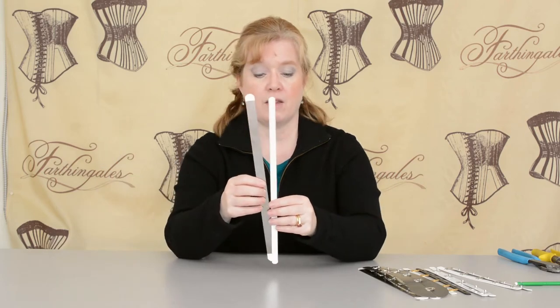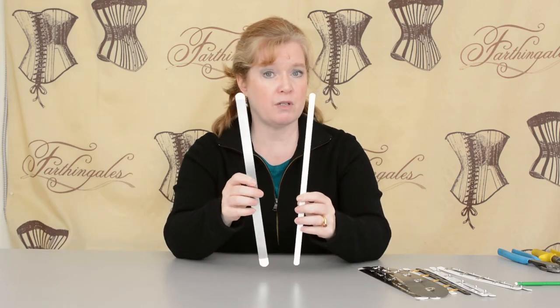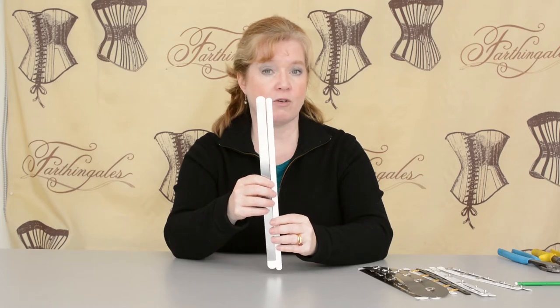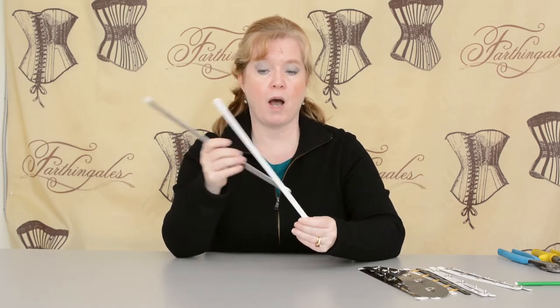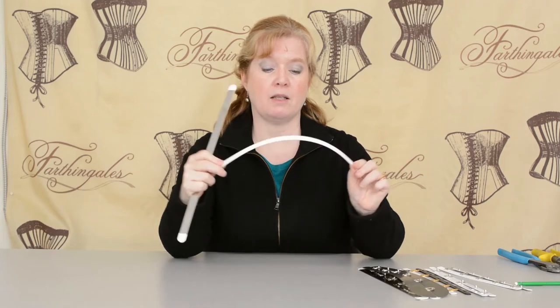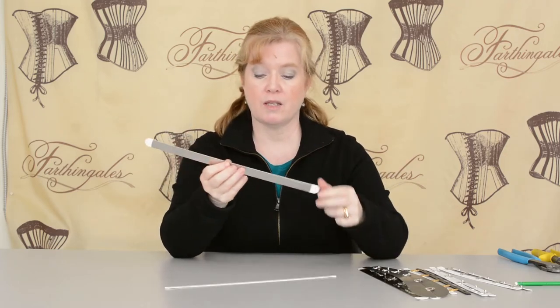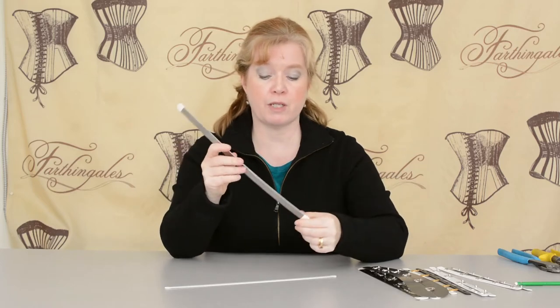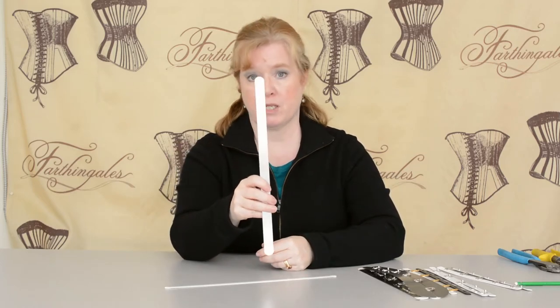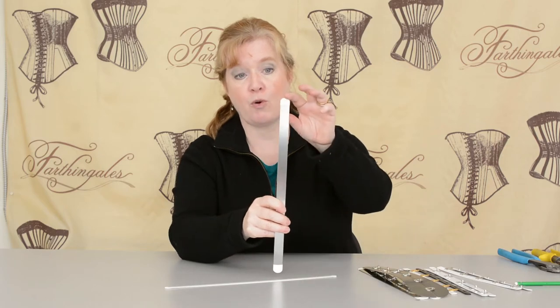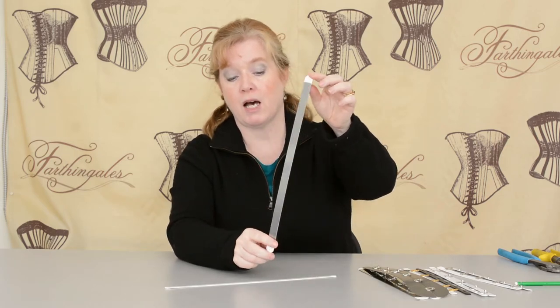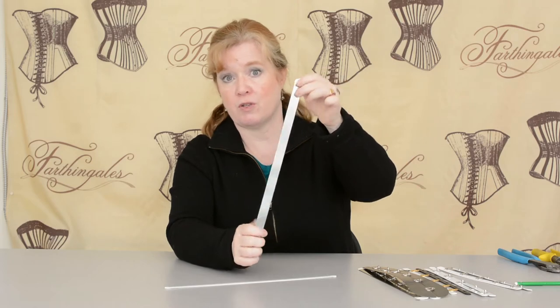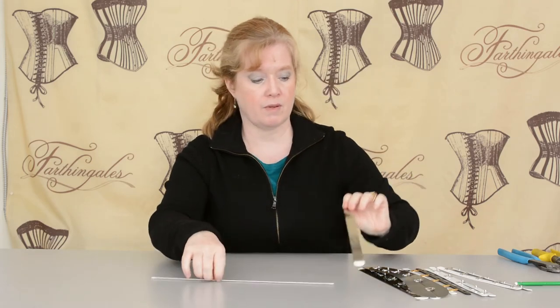Prior to the 1830s, busks did not open, but they did exist. They used to be a piece of wood, a piece of ivory, often engraved. Now you can use a wide bone. That's a light bone, very flexible. This is a chrome steel bone. You can't drill a hole through it, you can't really bend it, but it's perfect for a non-opening busk for corsets prior to the 1830s. You can also use it in a contemporary corset as well.